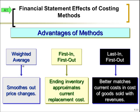So what we can see here is those three methods we talked about earlier and the advantages of each. First of all, weighted average basically smooths out the price changes. We're going to find out that FIFO and LIFO give us extremes and the weighted average is right in the middle. It smooths out those price changes — that's the biggest advantage of weighted average.